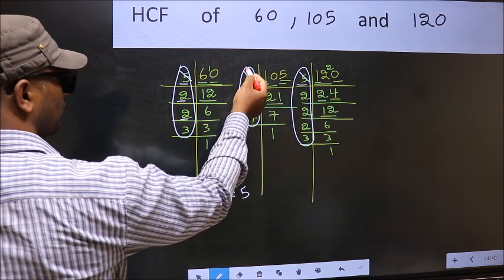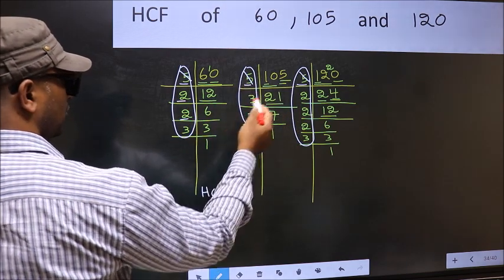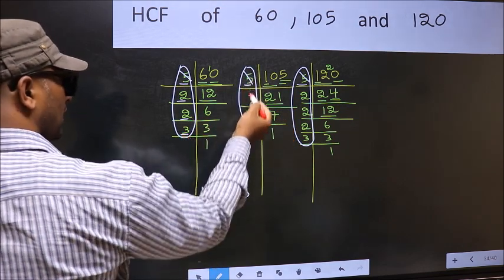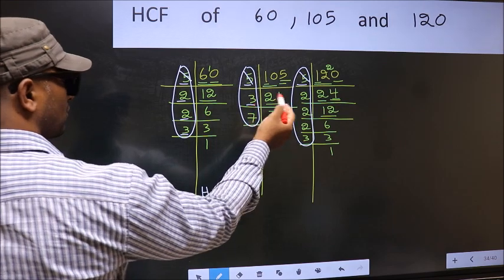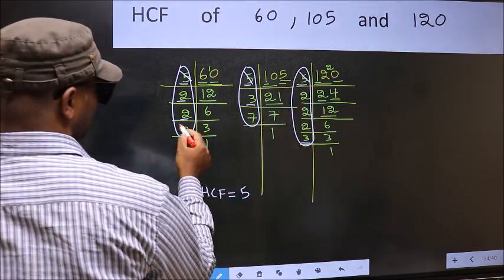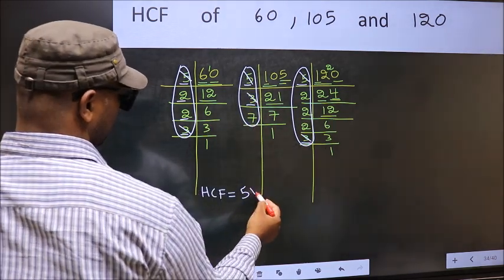Next number 3. Do we have 3 here? Yes. Go to the next place. Do we have 3 here? Yes. So cut 3 right here.